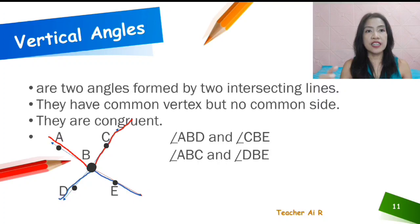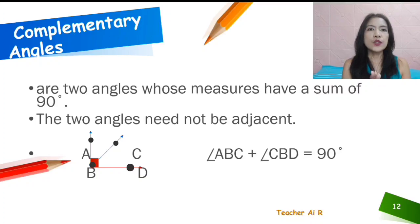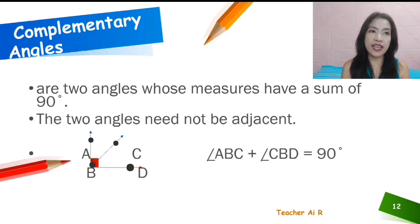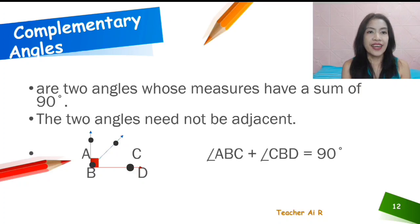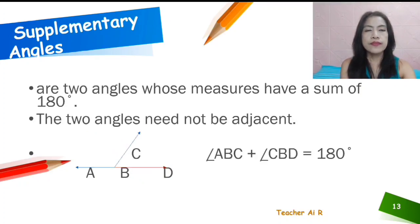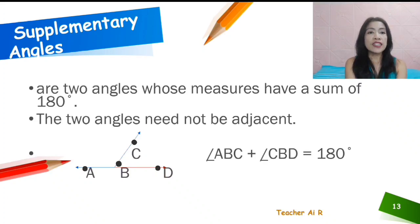They intersect at the common vertex but do not share a common side. That's the vertical angle. Next, we have complementary angles — they are two angles whose measures have a sum of 90 degrees. The total of the two angles is 90 degrees, and the two angles need not to be adjacent.